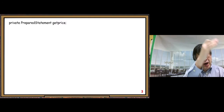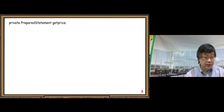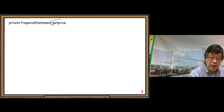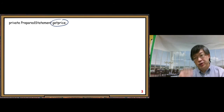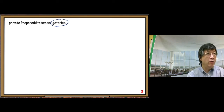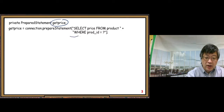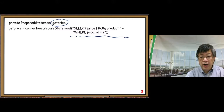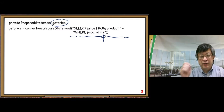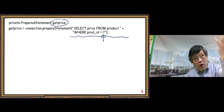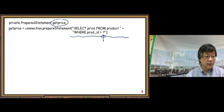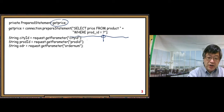For the database query part — how do we get the price of the selected product — we create a prepared statement called get price to retrieve the price information from our product table. The query string is: SELECT price FROM product WHERE product_id = ? The question mark parameter value comes from the user's input.